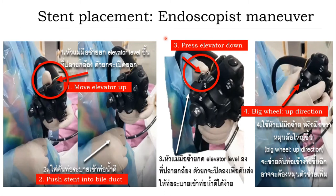These four basic steps for endoscopic maneuver in stent placement: keep the tip of scope close to the ampulla. Step 1: Move elevator up. Step 2: Put the stent into the bile duct. Step 3: Place the elevator down to further insert stent inside the bile duct. Step 4: Pick view in up direction to keep inserting stent inside. Repeat starting with Step 1 again until the stent is in proper position.